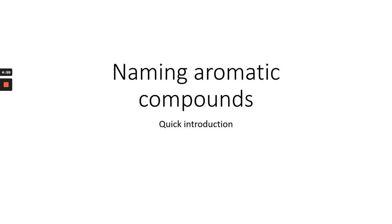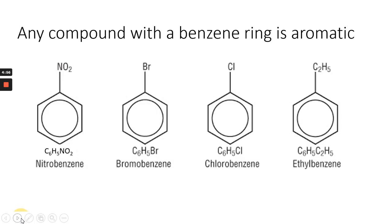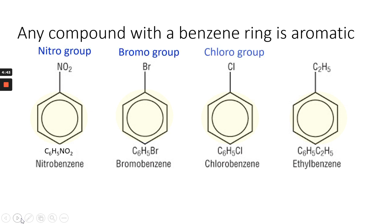Welcome to this short clip looking at naming aromatic compounds. Let's start by reminding ourselves that any compound with a benzene ring can be classed as aromatic. If we put the benzene ring in a yellow highlight, we can see that one of the hydrogens in the benzene ring has been substituted by a certain group. This substituent will be given a name which goes into the name of benzene compounds.